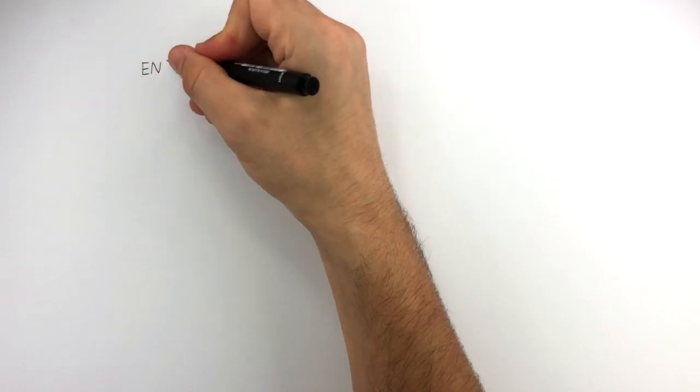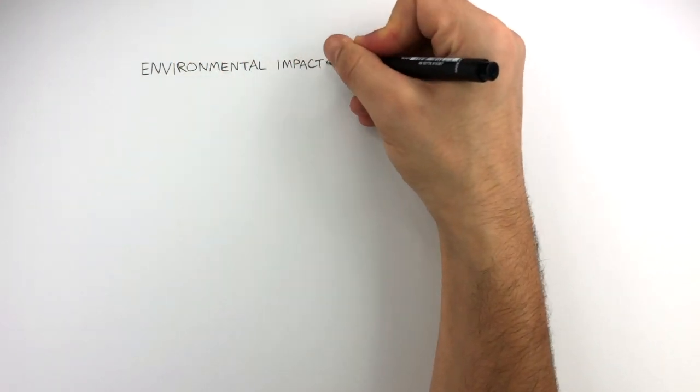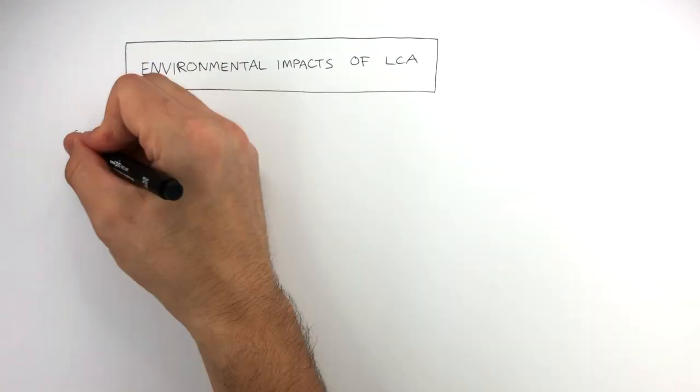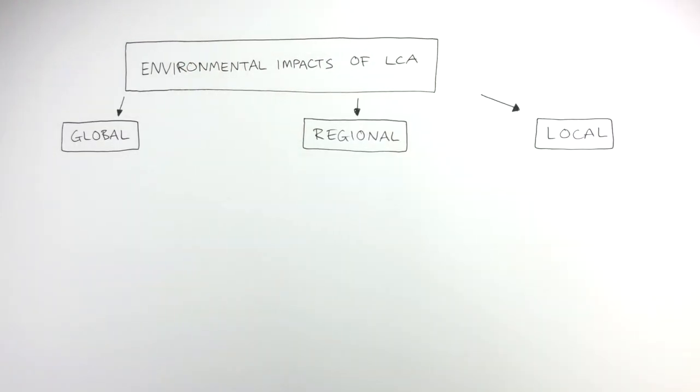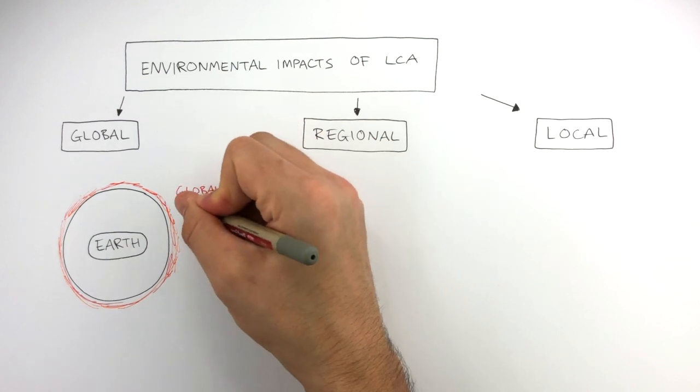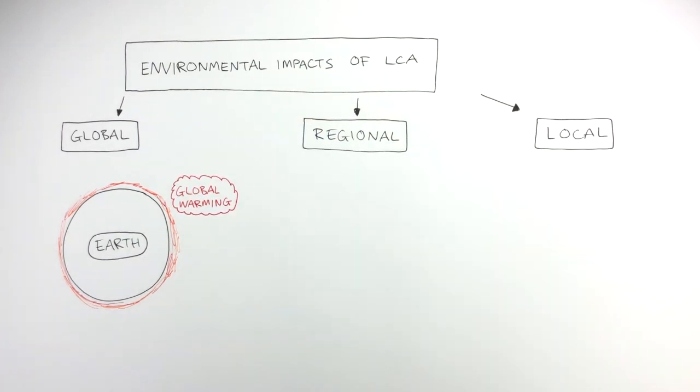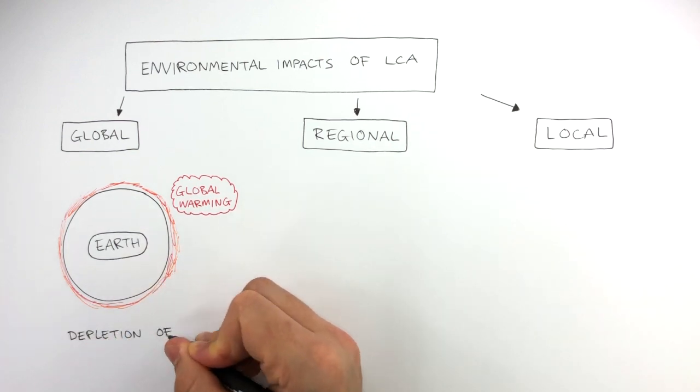Now, the environmental impacts of an LCA can be divided into global, regional and local impacts. Global environmental impacts affect the whole of earth. For example, global warming. Another example of a global environmental impact is the depletion of natural resources.